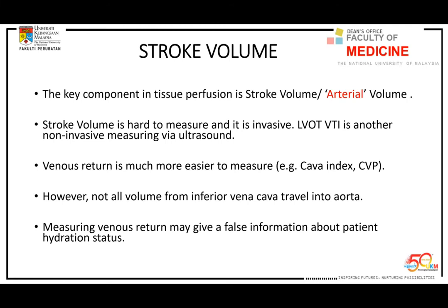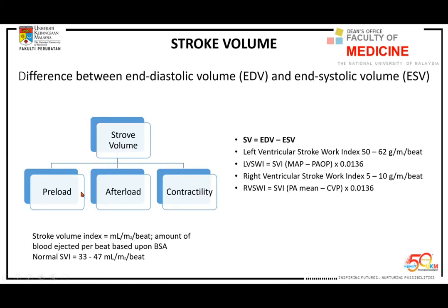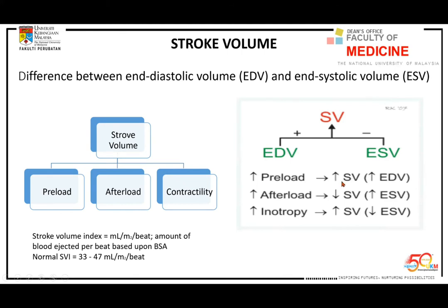Stroke volume is determined by preload, afterload — which is our TPR or systemic vascular resistance — and contractility of the heart. More preload means more stroke volume; more afterload means less stroke volume; inotropic support increases stroke volume. Stroke volume times heart rate gives you cardiac output. To use CVP to measure volume, you need to assume a one-to-one relationship between venous return and stroke volume — meaning normal physiology.